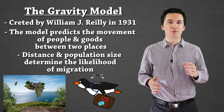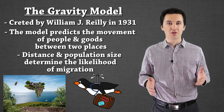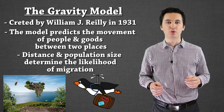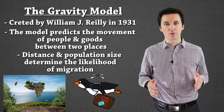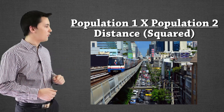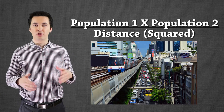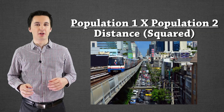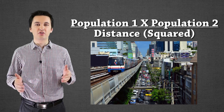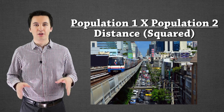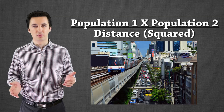Now we're going to get into the formula, because we can use it to better understand the likelihood of interaction between two locations. The gravity model formula is: take the population of city one times the population of city two, and divide it by distance squared. The distance is the distance between the two cities, and the result shows us the likelihood of interaction between them.